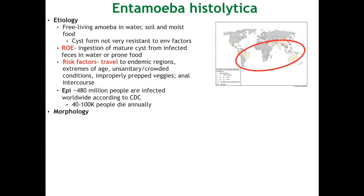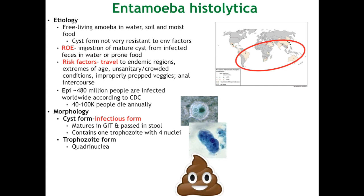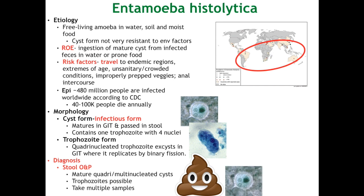Morphologically, the cyst form is spherical and visibly contains 2 to 4 nuclei. The trophozoite, or mobile form, exists in the small intestine and is also quadrinucleated. Diagnosis for Entamoeba is always going to be on stool O&P, where you can see mature multinucleated cysts. Trophozoites are possible, but they won't survive in the sample for very long. As with any stool O&P, it's very important to take multiple samples to reduce your risk of a false negative.